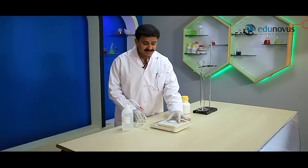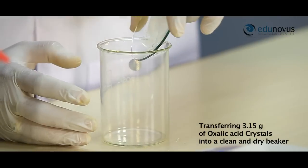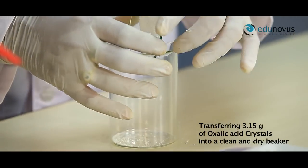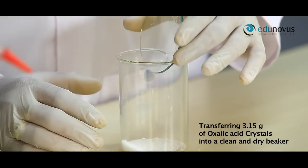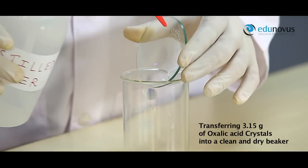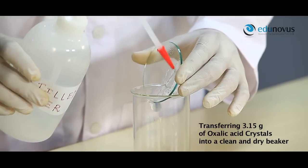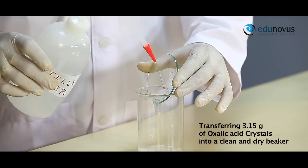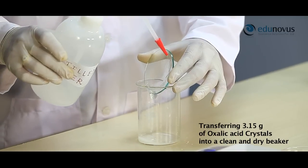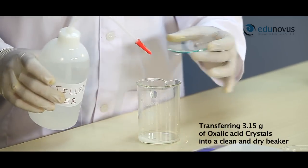Now transfer this 3.15 grams of oxalic acid into a clean and dry beaker and then wash the watch glass with distilled water to transfer the particles of oxalic acid sticked on it into the beaker.